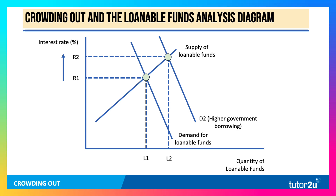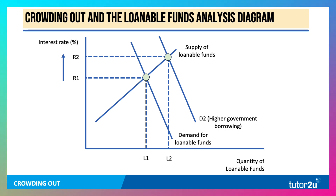And this is the idea of crowding out: that higher government borrowing can lead to higher interest rates, particularly in the bond market. And interest rates in the bond market often act as a kind of base for what happens to things like mortgage rates.